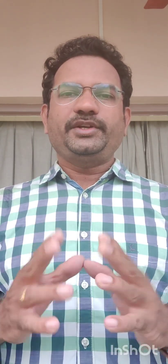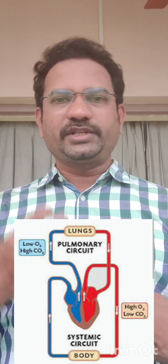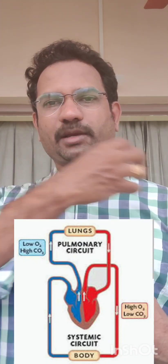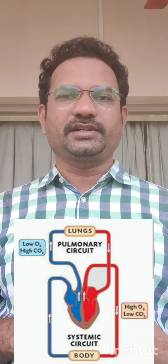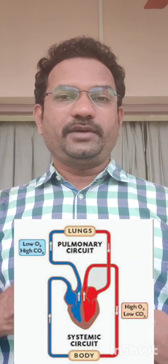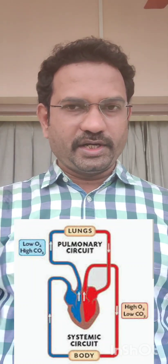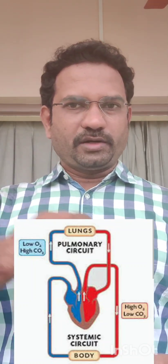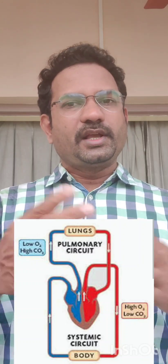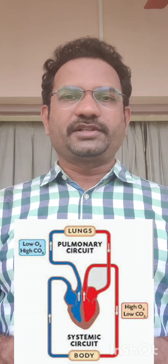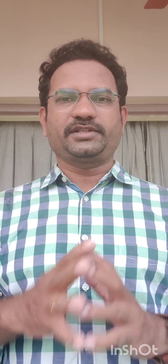Blood going to the lungs and coming out of the lungs — this part is known as pulmonary circulation. Whereas blood coming out of the aorta and draining back to the heart via vena cava — this part is known as systemic circulation.